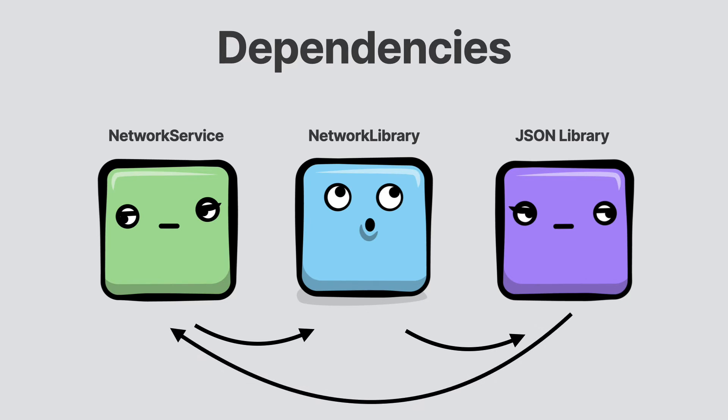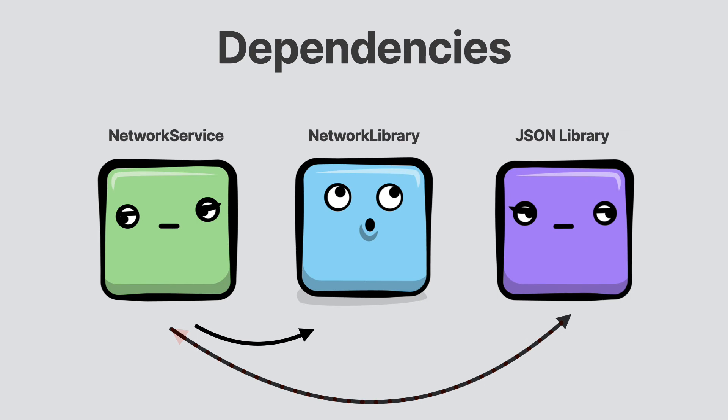Things get complicated when the network service starts using the JSON library in its code but doesn't declare its dependency. It all works because the dependency is resolved through the network library. So if someone removes the dependency from the networking library to the JSON library, the build breaks. By declaring all our dependencies where we are using them, our app becomes resilient to these types of errors.